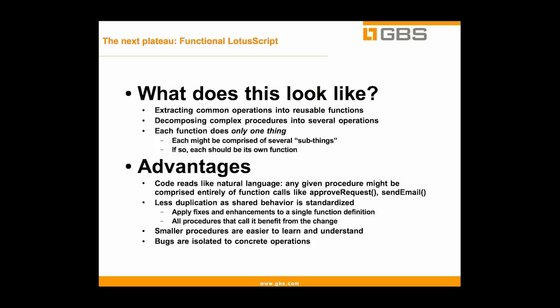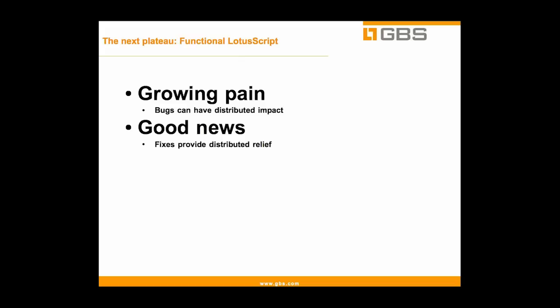There is one growing pain with this approach. As we start to centralize our functions, we can have distributed impact for our bugs. Whereas bugs used to be isolated to a specific button or form event, it's now possible that a bug could crop up in a dozen different places because each of those events calls the same function. But there's a flip side: once you identify the fix, you fix it in one place and that provides distributed relief.